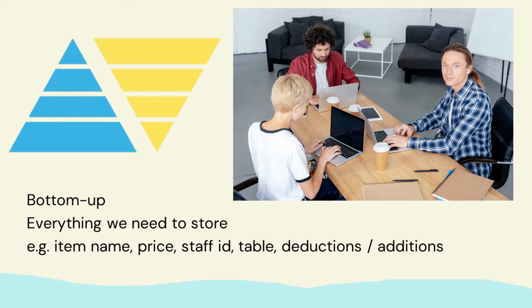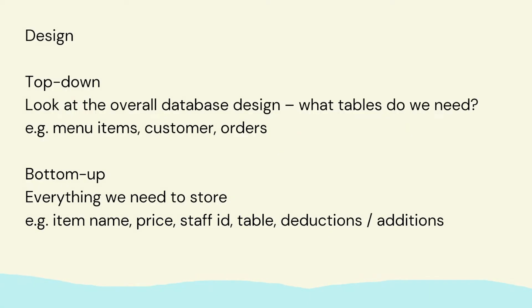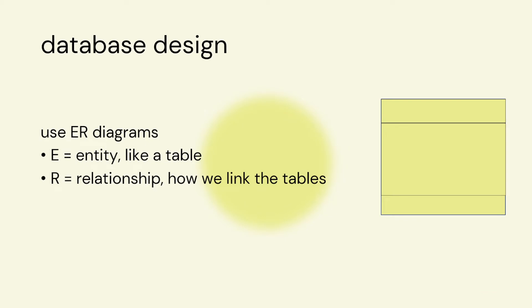So how do we think about our database design? We use something called an ER diagram. E stands for entity, which is like a table, and R stands for relationship, which is how we link the tables.